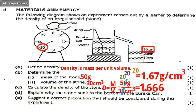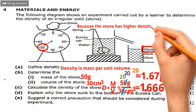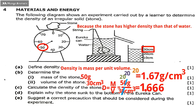Question 4d is: explain why the stone sank to the bottom in the eureka can. The reason why the stone sank is because the stone has higher density than water.